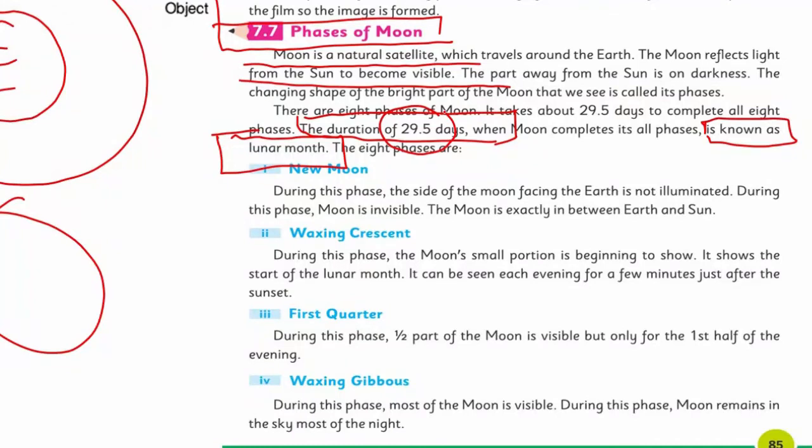Dear children, what are these 8 phases? Phase number one is new moon. In the new moon, we cannot see the moon at all. During this phase, the side of the moon facing the earth is not illuminated. The dark side is facing us and it is totally invisible.